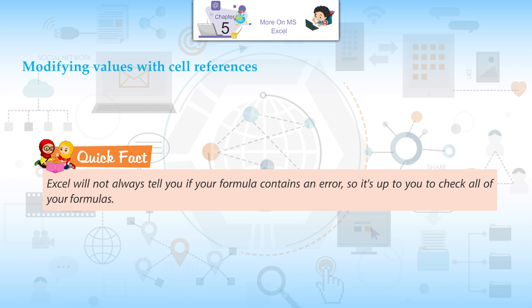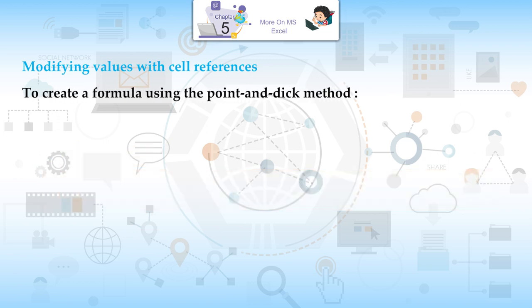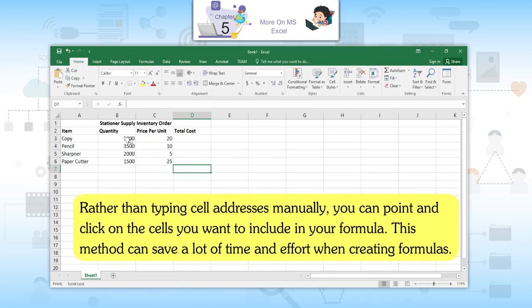Quick fact: Excel will not always tell you if the formula contains an error, so it's up to you to check all of your formulas. To create a formula using the point and click method, rather than typing cell addresses manually, you can point and click on the cells you want to include in your formula. This method can save a lot of time and effort when creating formulas.